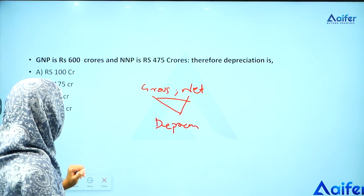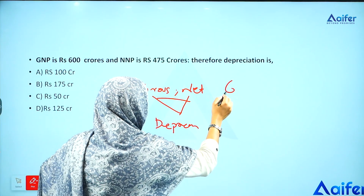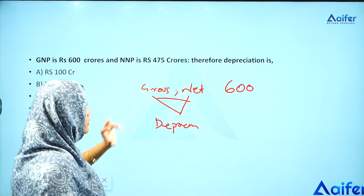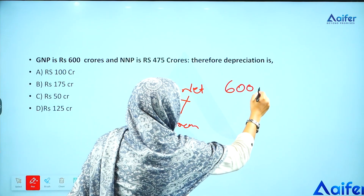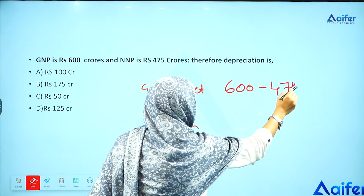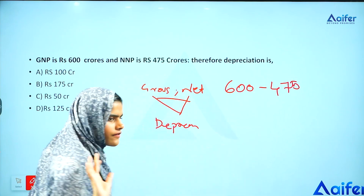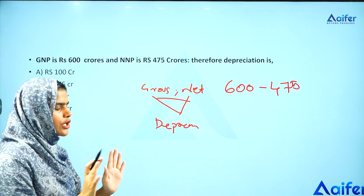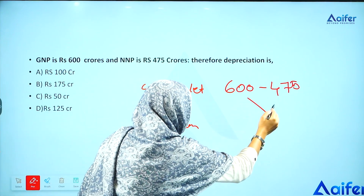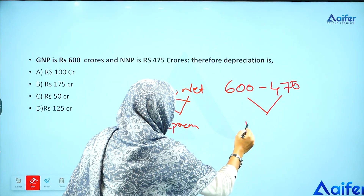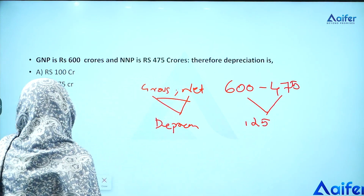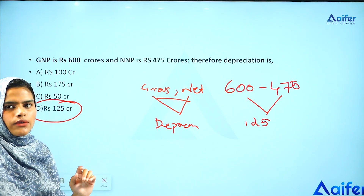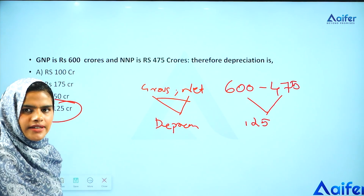The difference between gross national product and net national product is depreciation. Gross national product is 600 crores, net national product is 475 crores, so the difference — that is the depreciation — is 125 crores. Therefore, option D, 125 crores, is the right answer.